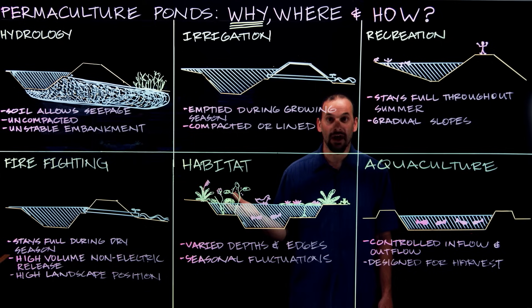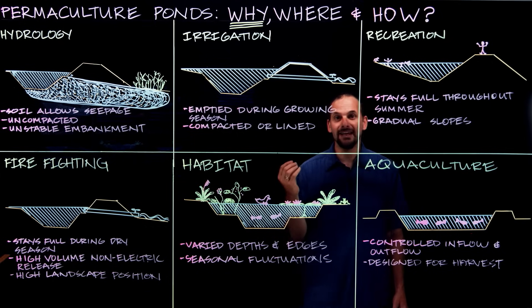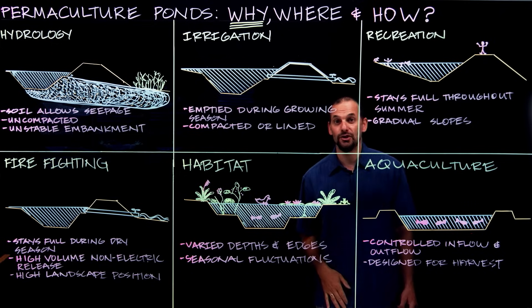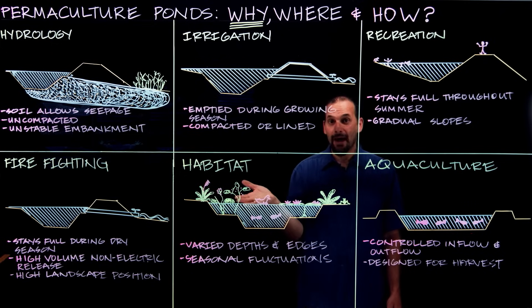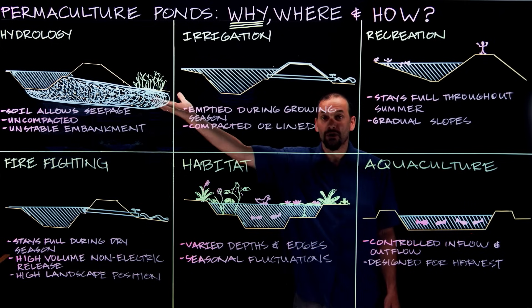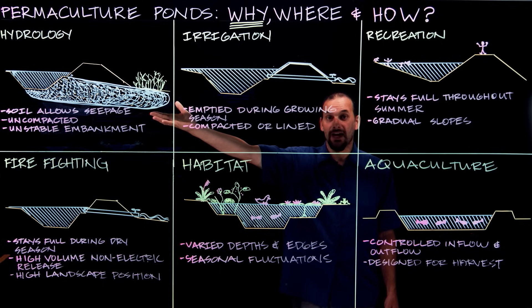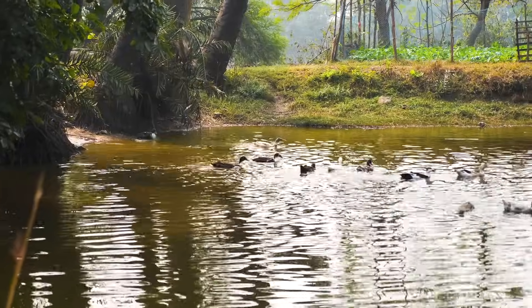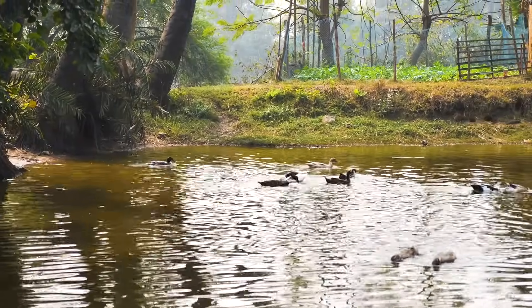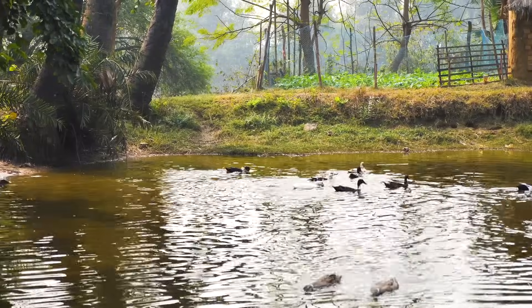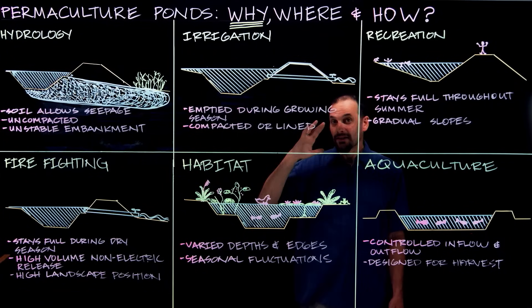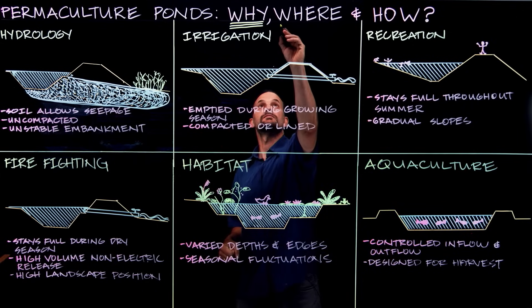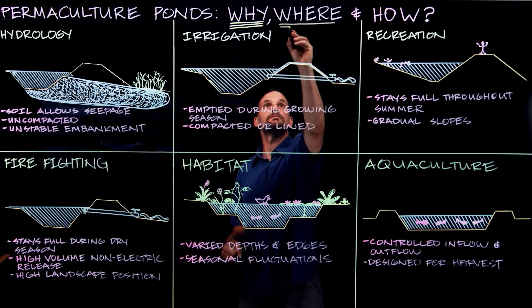So in permaculture we work to create as many uses and yields from every element. So how many uses can a single pond provide? I mean, the design is only limited by the creativity of the designer. So how many connections can you make? How about a habitat pond that also seeps water and benefits the hydrology while raising ducks and providing fertilized water for irrigation? The limit is your own imagination. So this is a general sense of the why, and now let's talk about the where.